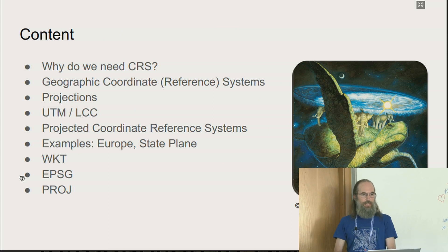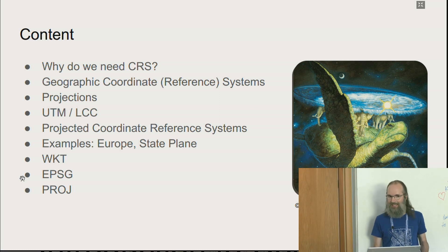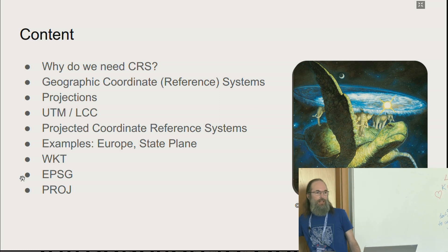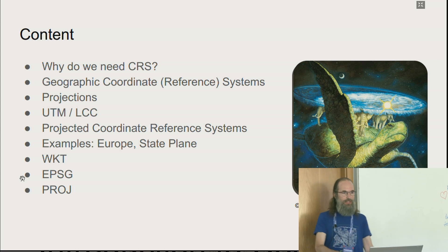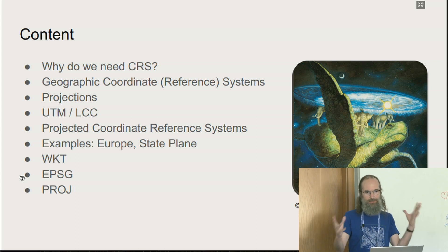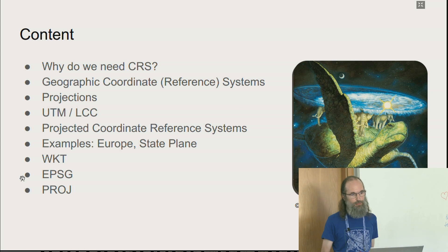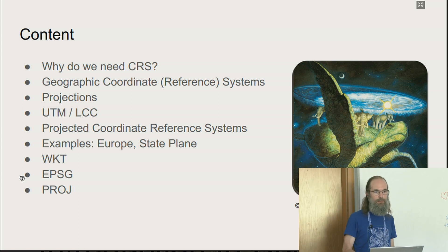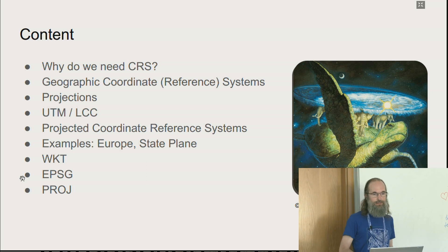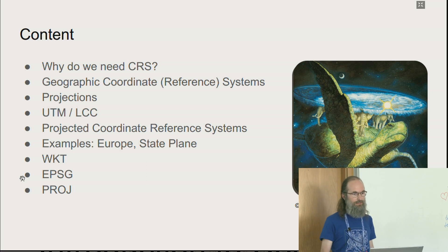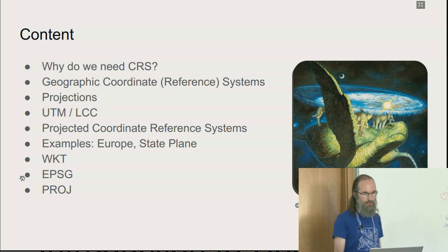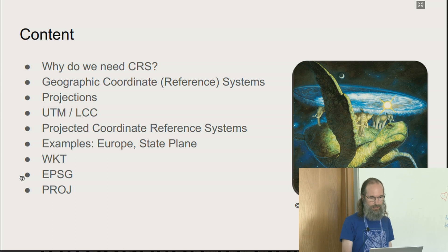What are we going to see here today? First, why do we need coordinate reference systems? We'll start with a geographic coordinate reference system as a model of the Earth, different projections like UTM or Lambert conformal conic, then how with that we can create projected coordinate reference systems, and some examples in Europe or in the US. I will talk about WKT, the EPSG database, and the PROJ open source library.